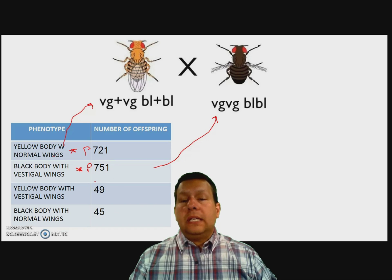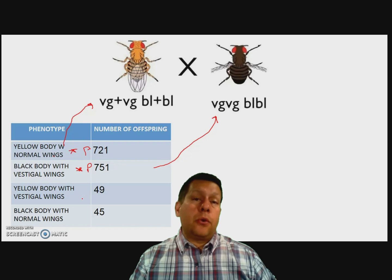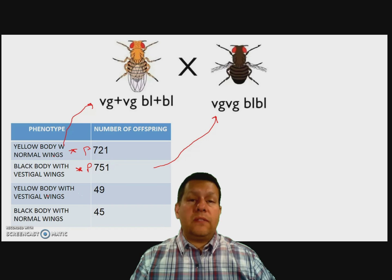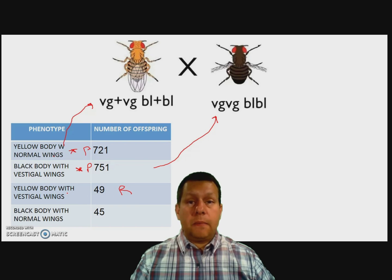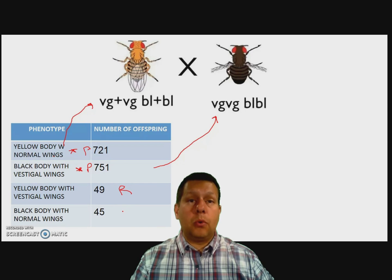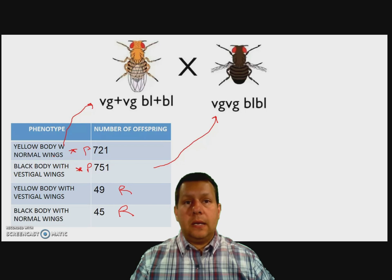The clue is down on the bottom of this data table — these are your recombinants. You have a yellow-bodied with vestigial wings. We call that a recombinant because it's showing a trait from each parent. And the same thing is true with a black body and normal wings — we're going to call that one a recombinant trait as well.